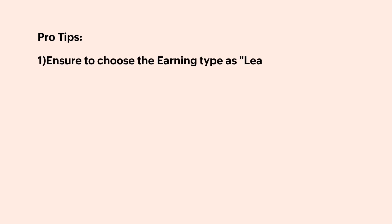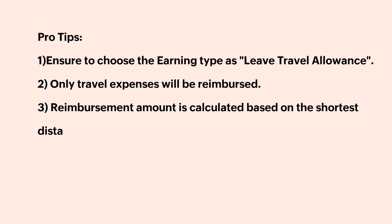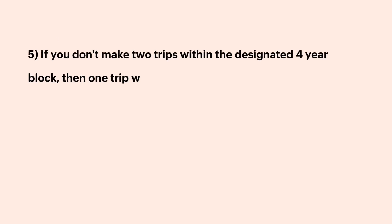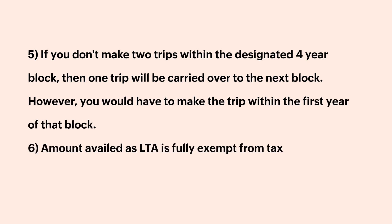Pro tips: Please ensure to choose the earning type as Leave Travel Allowance, as only travel expenses will be reimbursed. The reimbursement amount is calculated based on the shortest distance between the two places. Reimbursement can only be availed twice in a block of four years. If you don't make two trips within the designated four-year block, then one year's trip will be carried over to the next block; however, you would have to make the trip within the first year of that block. The amount availed as Leave Travel Allowance is fully exempt from taxes.